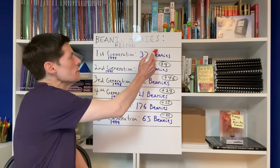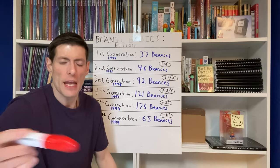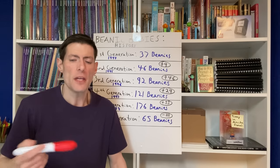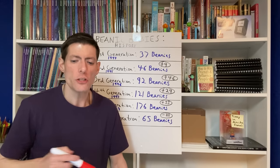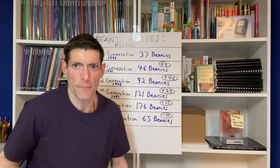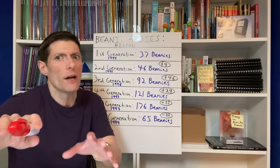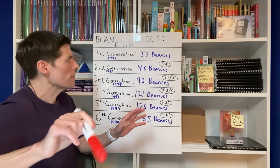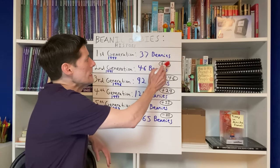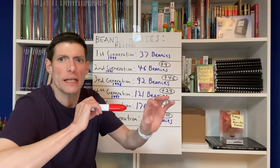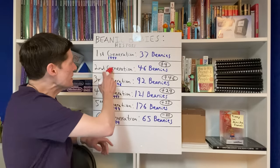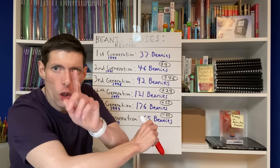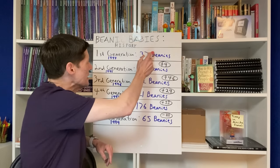So in 1994, the first 37 coveted Beanie Babies premiered. And the first nine were Legs the Frog, Squealer the Pig, Brownie the Bear, Flash the Dolphin, Splash the Whale, Patty the Platypus, Chocolate the Moose, Spot the Dog, and Pinscher's the Lobster. Now, I know that you didn't need to know that, but I know you wanted to know that. In 1995, Ty, being as intelligent as he was, he looked at the market and he said, you know what? We're only going to release another nine Beanie Babies into the market. It's still not where we want it. So in 1995, 46 total Beanie Babies were released into the market. This includes the original 37 that were already released in 1994.